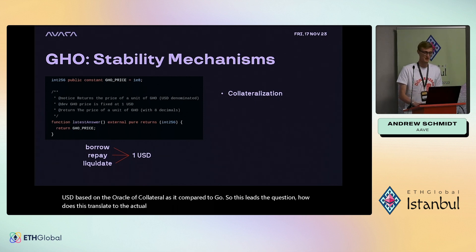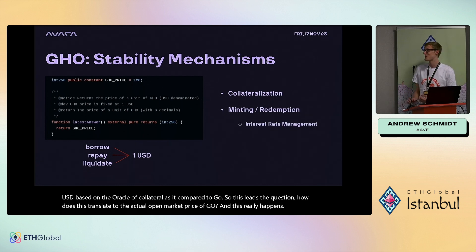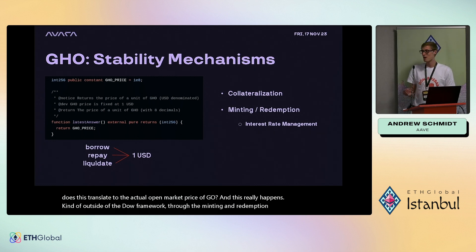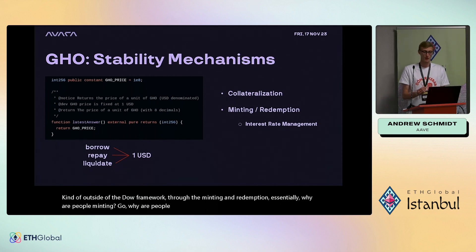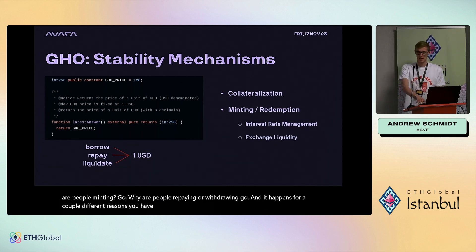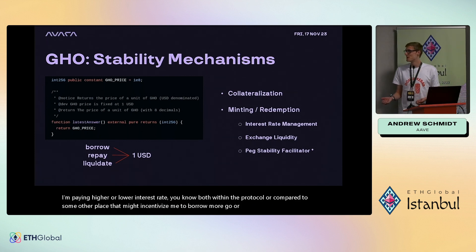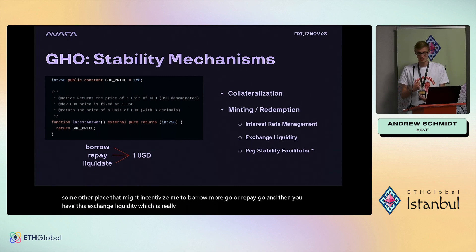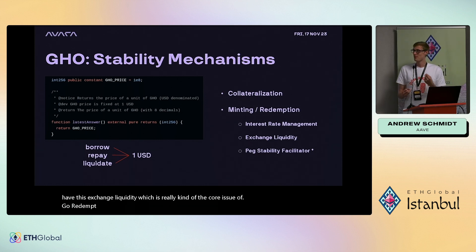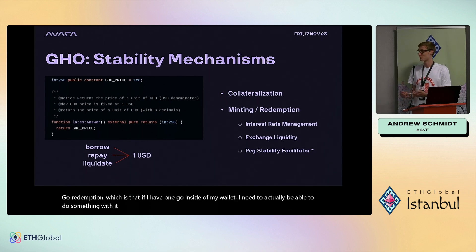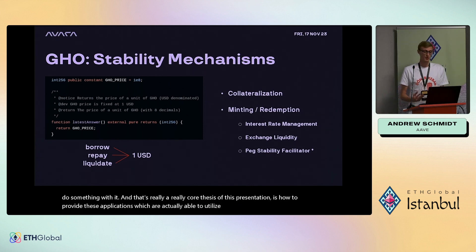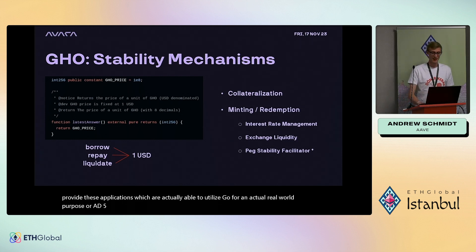How does this translate to the actual open market price of GHO? It happens outside the DAO framework through minting and redemption — why are people minting GHO, why are people repaying or withdrawing? Factors include interest rate management (a higher or lower rate might incentivize borrowing more or repaying GHO) and exchange liquidity, which is the core issue: if I have one GHO in my wallet, I need to actually be able to do something with it. That's a key thesis of this presentation.